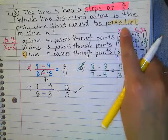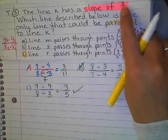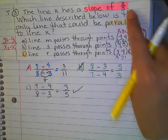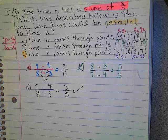If it had said perpendicular, then of course you would have been looking for the slope of negative 5 over 3. So just be careful with the magic word.